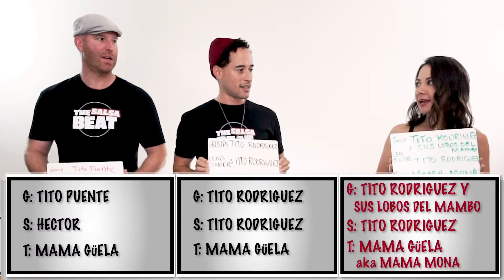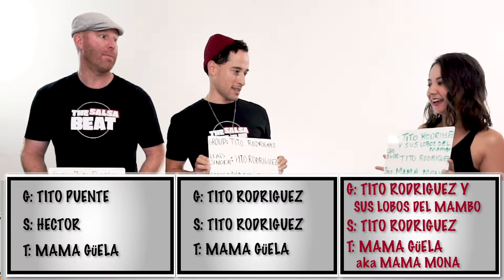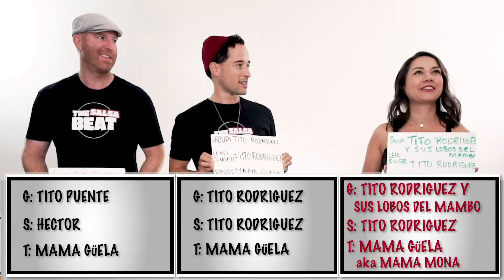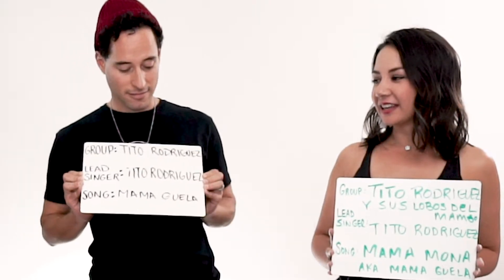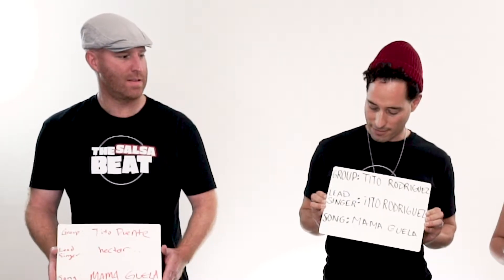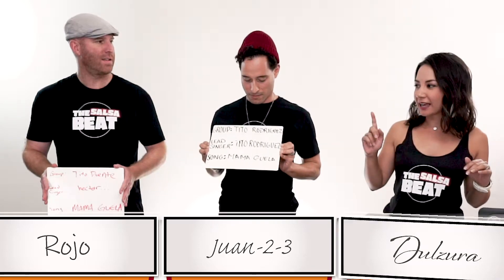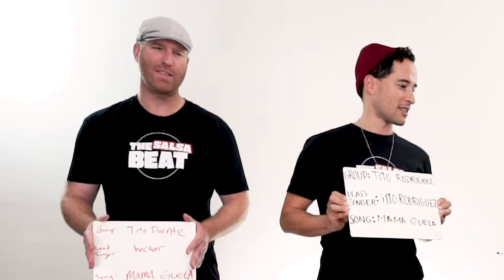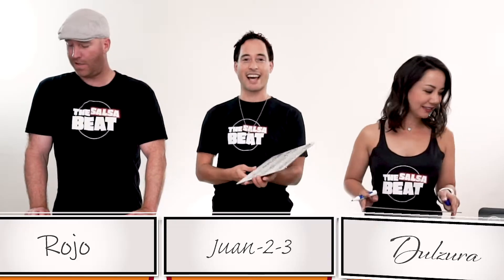Oh, we got two Titos! Tito Rodriguez and the Lobos del Mambo. Tito Rodriguez. Mambo Mona. I never heard that name — Mamona. So that was the original song title, and then they changed it to Mambo. That's the more well-known song title. You get two points. I got one — you got Tito. Juan gets two and Rojo gets one. You got the lead singer and the song title but not the group because you forgot Y Sus Lobos del Mambo. Yeah, that is important. I'll take it — I get two points. Two goes to Juan and one for Rojo.